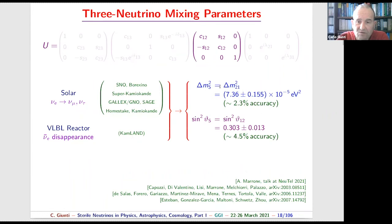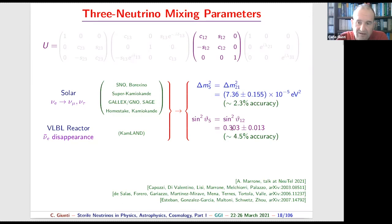There are many solar neutrino experiments that observed the transition of solar electron neutrinos into nu_mu and nu_tau. The KamLAND experiment also observed the disappearance of electron anti-neutrinos from reactors at very long distance, due to the solar Δm² which is relatively small — about 7×10⁻⁵ eV². The global fit gives the solar Δm² with about 2.3% accuracy.